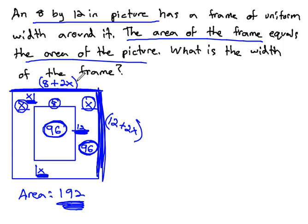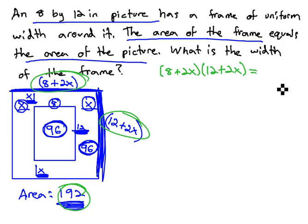Putting this all together, one side is 8 plus 2x, another side 12 plus 2x, to give us an area of 192. That becomes 8 plus 2x, times 12 plus 2x, equals the total area of 192.